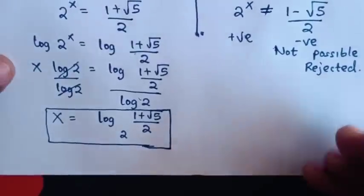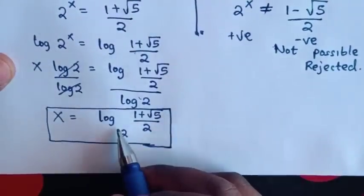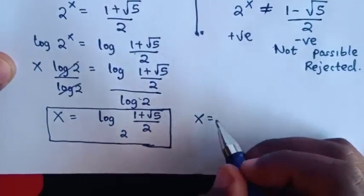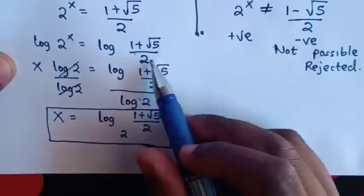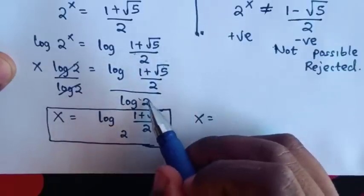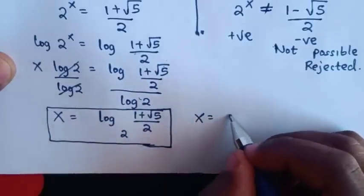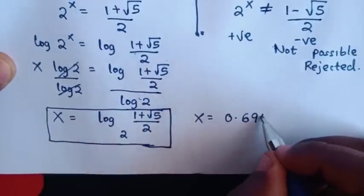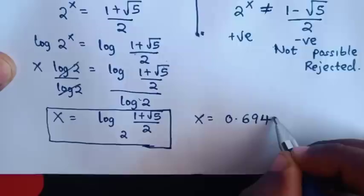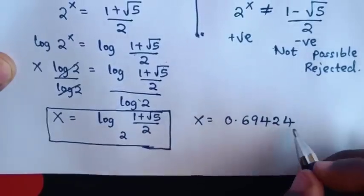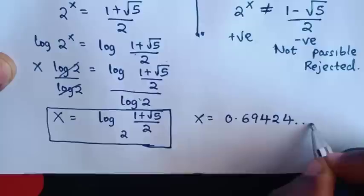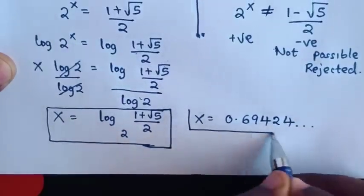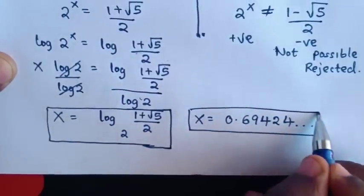Therefore the value of x in terms of logarithm is x is equal to log of 1 plus square root of 5 over 2, divided by log 2. Using a calculator, this gives approximately 0.69424.